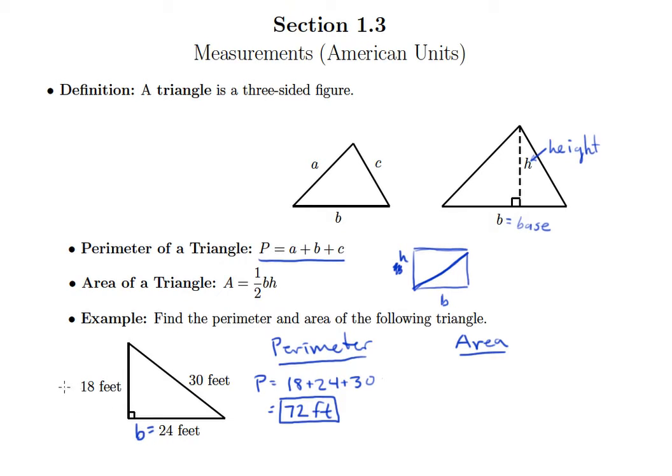And this side of the triangle happens to be our height in this case. So that's going to be 18 feet. Okay, sometimes the height is the side of a triangle like right here where they make a 90 degree angle. Other times it won't be. So you just have to pay attention to whether two sides make a 90 degree angle or not. All right.